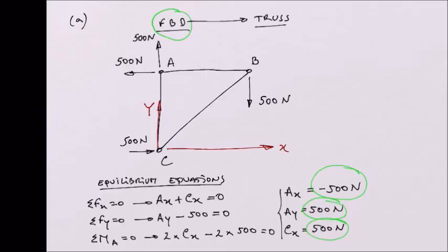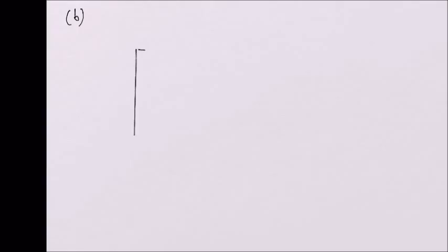We are now going to do part B, which is forces in each member of the truss, using the method of joints. Basically, we have to isolate our joints and do free body diagrams for each joint. I am going to draw again the truss with joints at point A, joint B, and joint C.